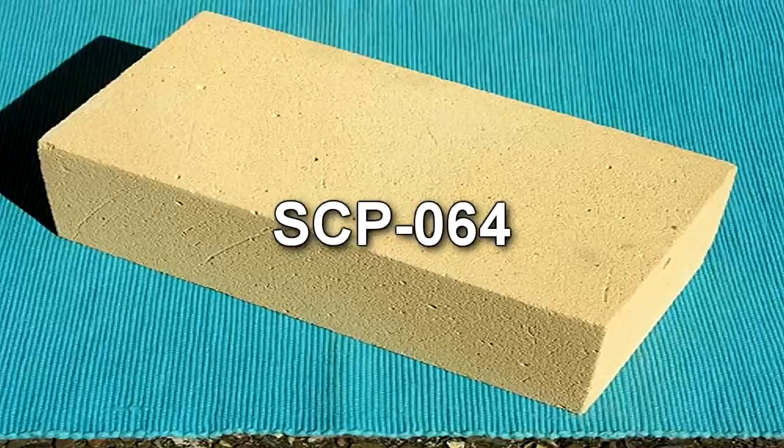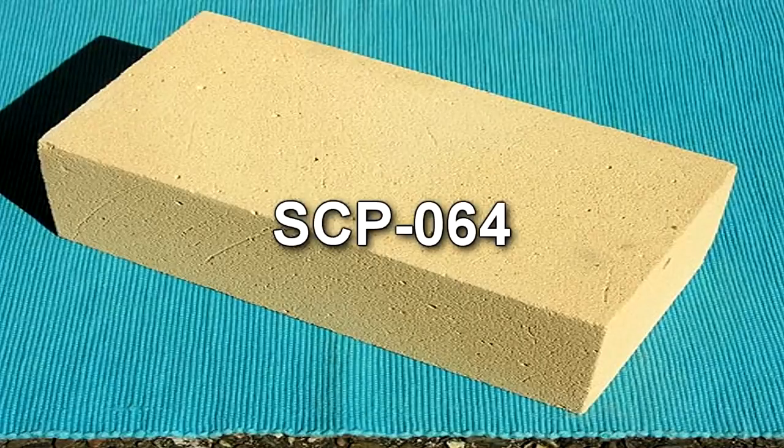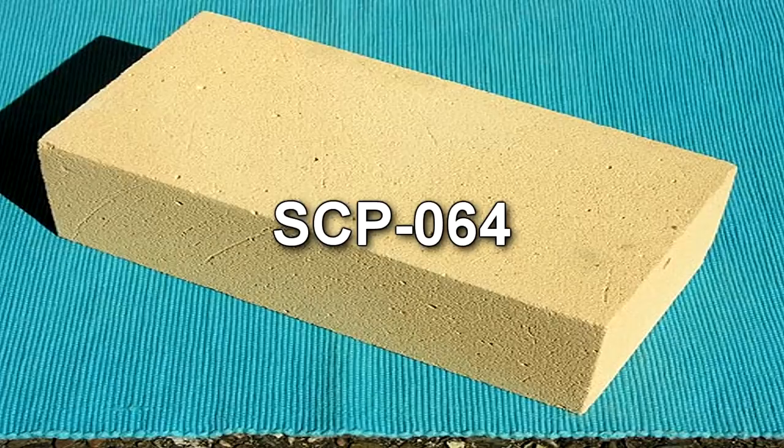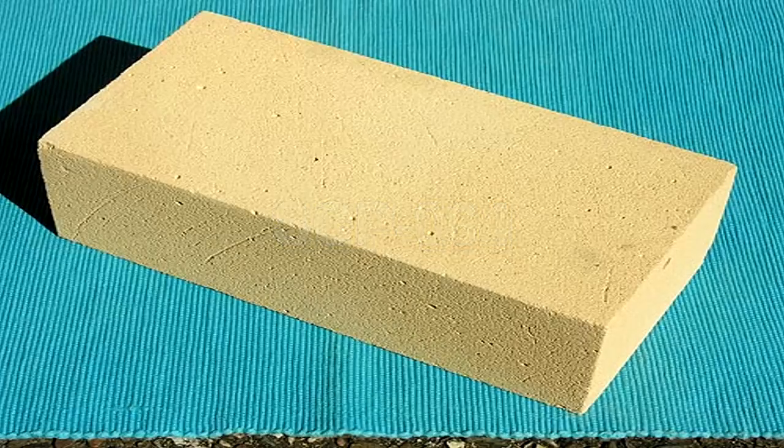SCP-064 is a light brown earthenware brick composed primarily of silicon oxides and some organic matter. The object weighs 1.6 kilograms and measures 10 cm x 6 cm x 20 cm. Its surface is smooth and flat, with some minor cosmetic chips. By and large, the object is visually similar to most solid bricks used in construction.